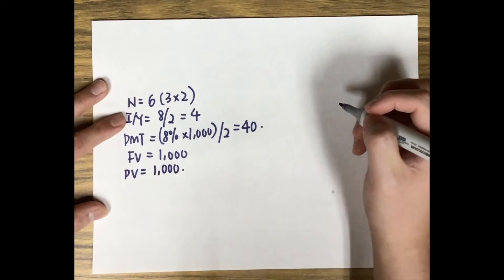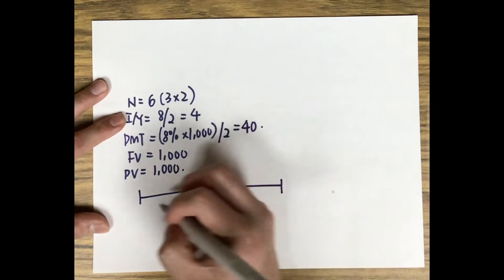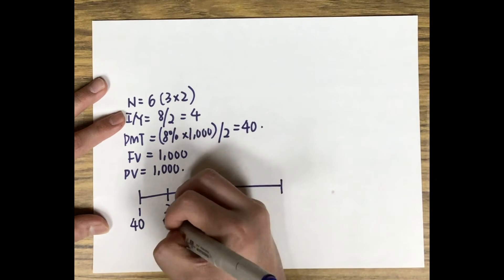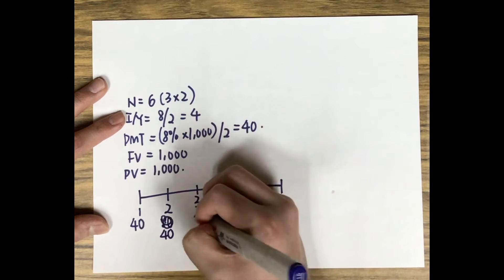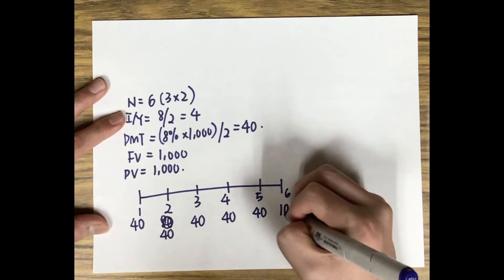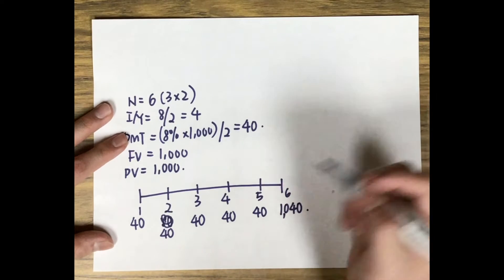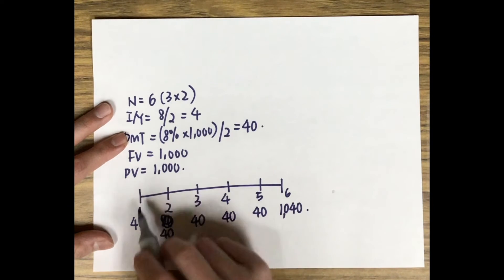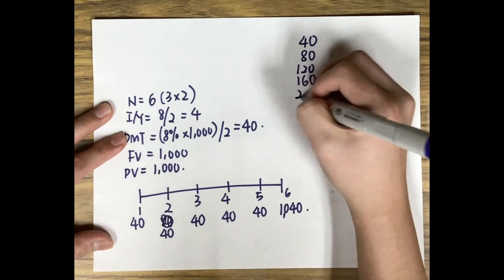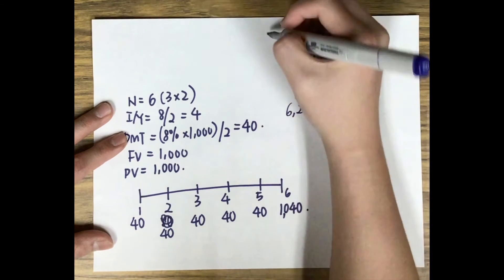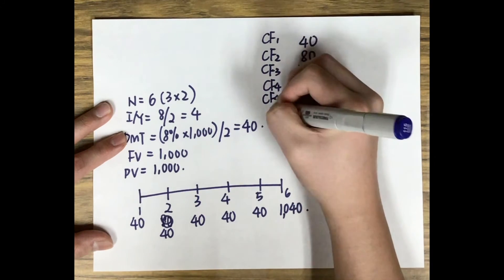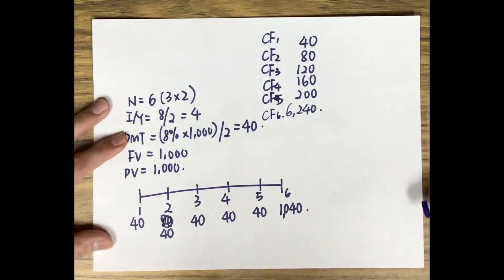For the semi-annual bond, the timeline shows payments every half year: $40 at period 1, $40 at period 2, $40 at period 3, $40 at period 4, $40 at period 5, and $1,040 at period 6. Multiplying each by its period gives: $40, $80, $120, $160, $200, and $6,240.